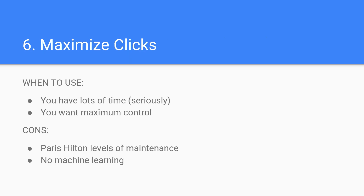Next up, we have maximize clicks — an automatic bidding strategy based on your maximum daily budget. Google Ads will attempt to drive the most clicks possible with your daily budget, but that doesn't really consider the quality or relevance of the traffic, and it's not ideal for driving sales or other conversions. Maximize clicks is the best option if you have a limited budget or limited search volume for the keywords in your campaign, and you're confident you can get strong conversion volume, or it's a very easy-to-access conversion like a simple email lead or a pure traffic goal.